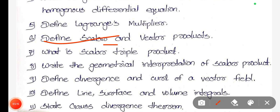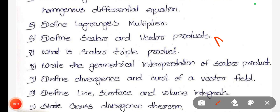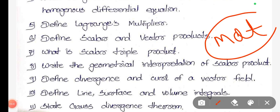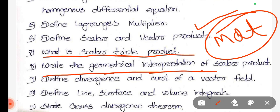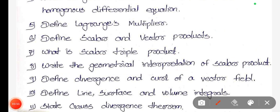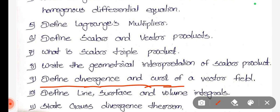Define the scalar and vector products. If you read the mathematical method, you can read it. What is the scalar triple product? Write the geometrical interpretation of scalar product. Define divergence and vector field.